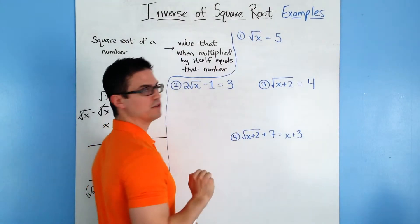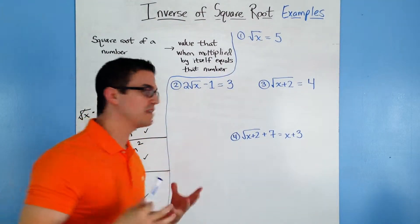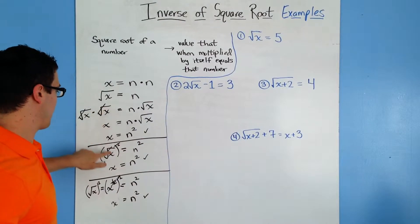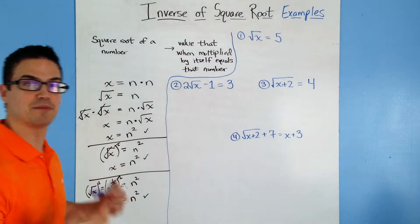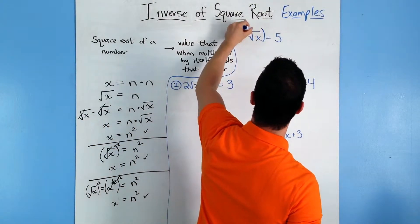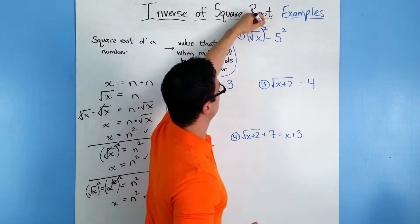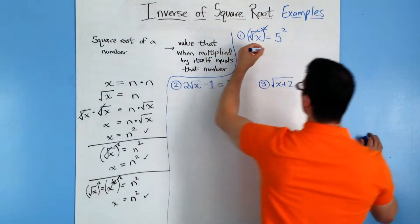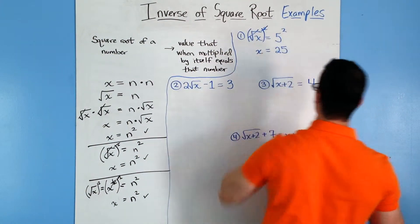For our first one, we have the square root of x is equal to 5. One of the ways we can get rid of the square root is to simply square it. So I'm going to square both sides. When this happens, the squared and the square root cancel, and you end up with x is equal to 5 squared, which is 25.